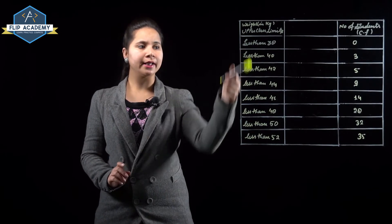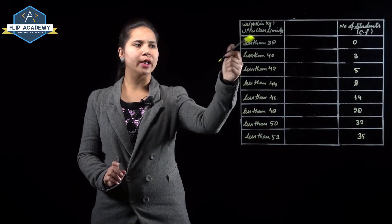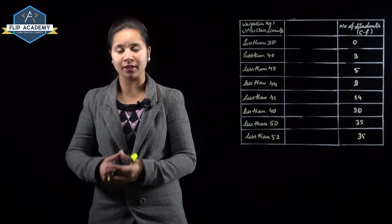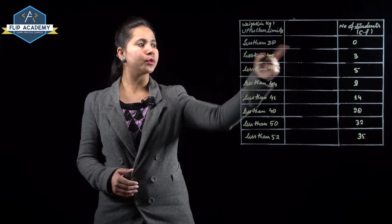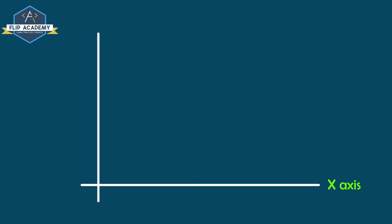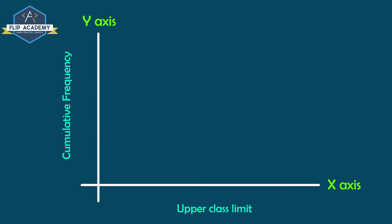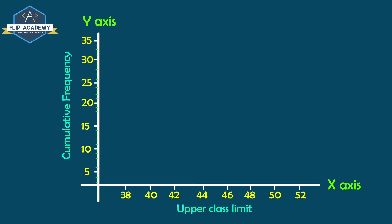For the ogive, on the x-axis we plot weight in kilogram (upper class limit), and on the y-axis we plot number of students (cumulative frequency). The first point to plot is (38, 0).